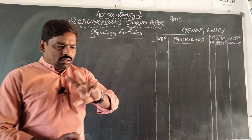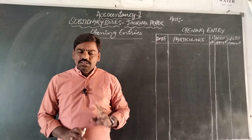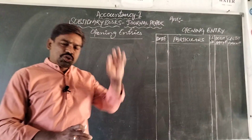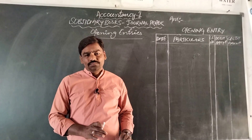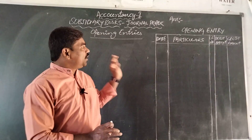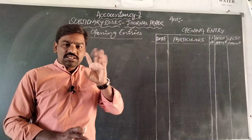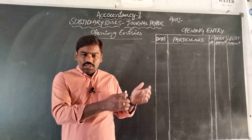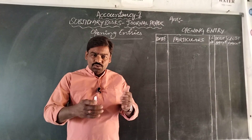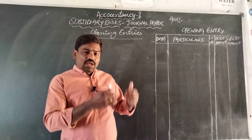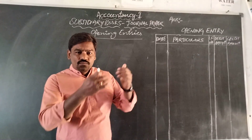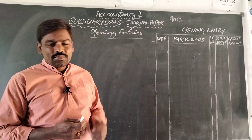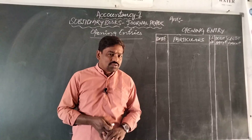The first situation is: whenever we open a new set of books in the business organization at the beginning of the accounting year, we write opening entries in the journal proper. The second situation is: whenever a trader brings assets and liabilities into the business, we write entries first in the journal proper as opening entries.